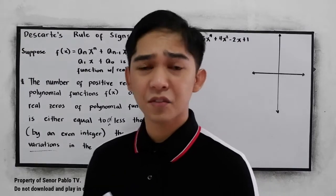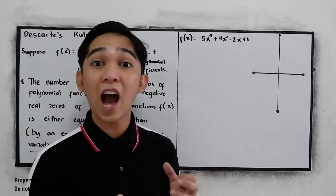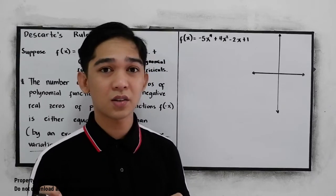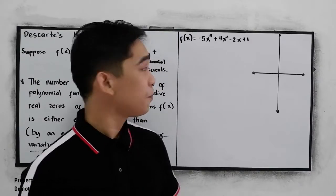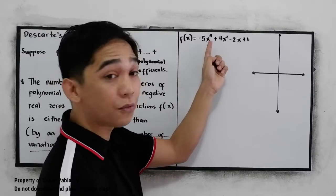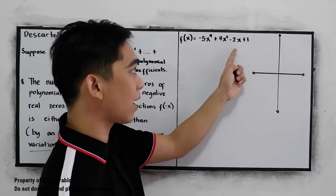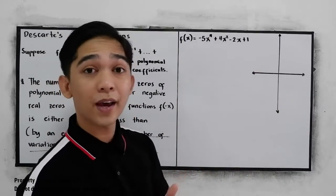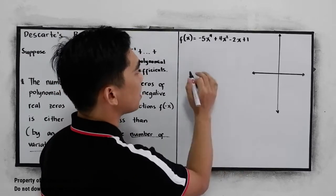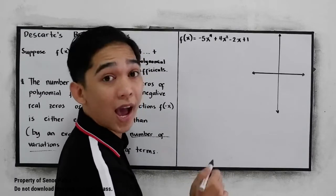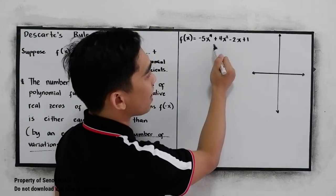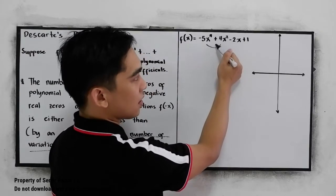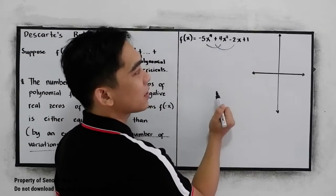To better understand, let's look at this example. We're going to find how many positive real zeros and how many negative real zeros. When we say real zeros, we're talking about the real ones, not imaginary. So f(x) equals negative 5x⁴ plus 4x² minus 2x plus 1. Our exponents are arranged from highest to lowest. Now we find the positive real zeros for f(x) by counting sign changes: negative to positive — that's one; positive to negative — that's two; negative to positive — that's three.